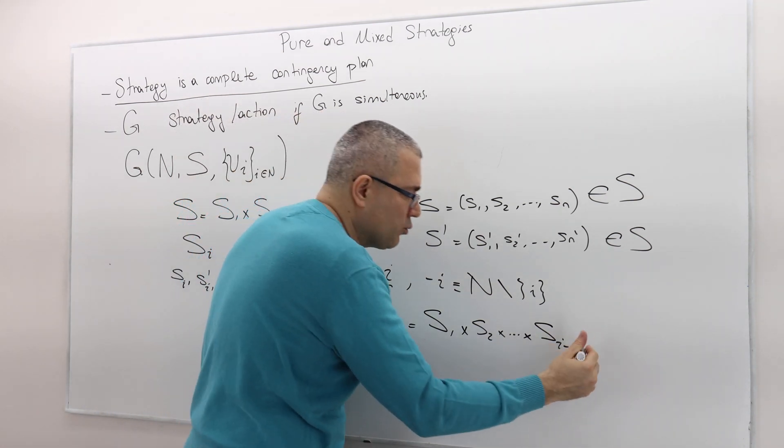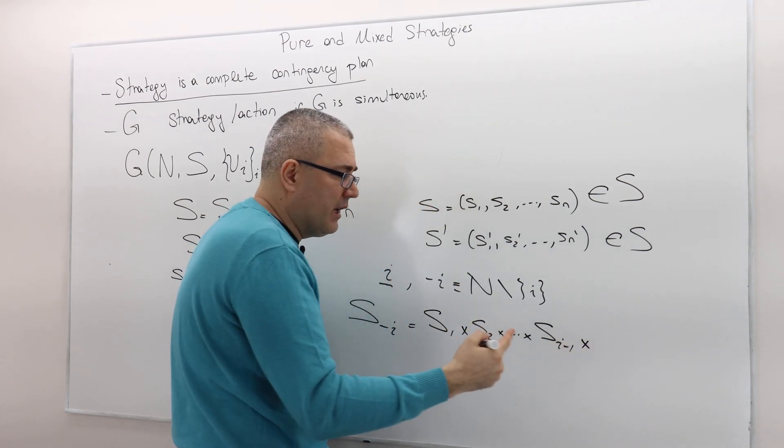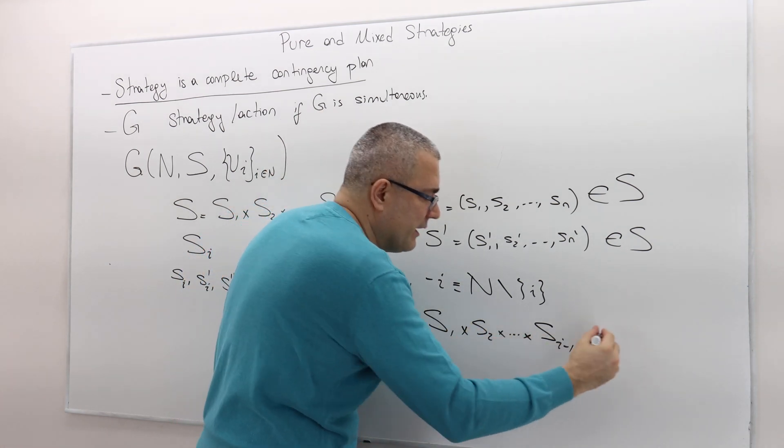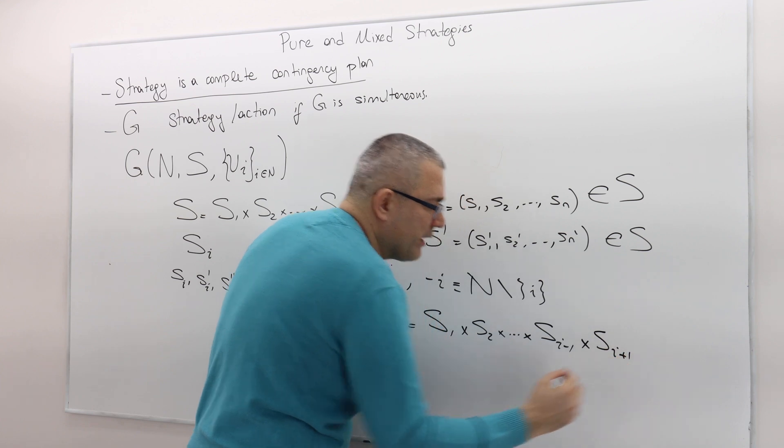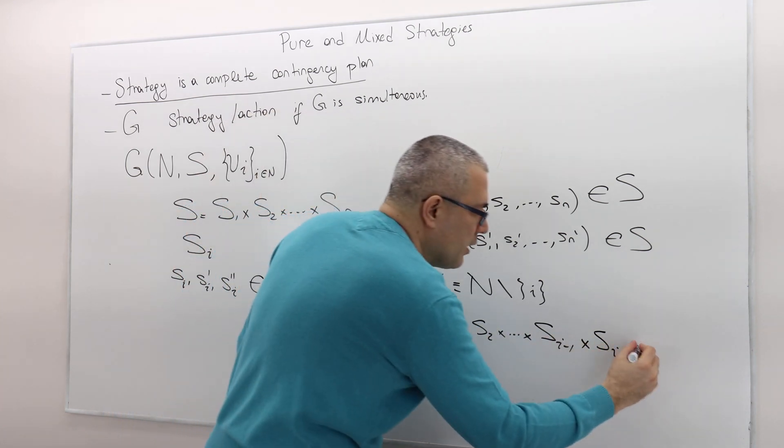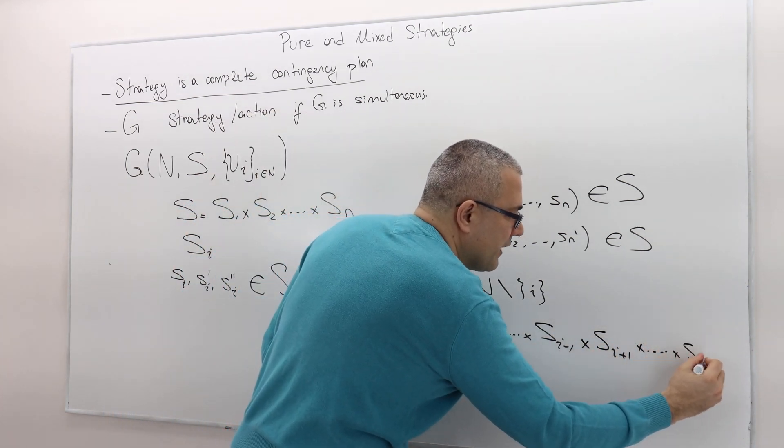Remember, the players are kind of numbered as 1, 2, 3, 4, 5, etc. So this is player I minus 1. I skip player I. It's not included in here. Therefore, the next player is player I plus 1. Cross all the way up to S_N.